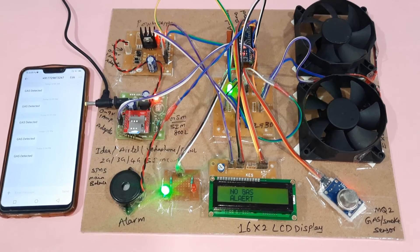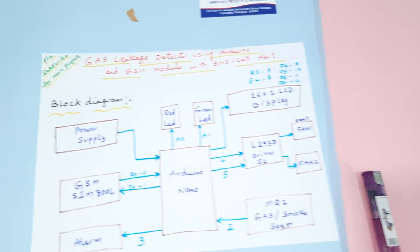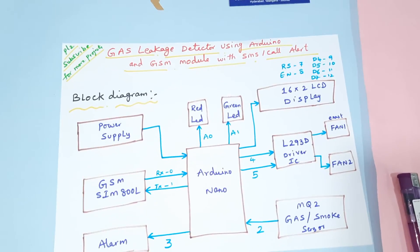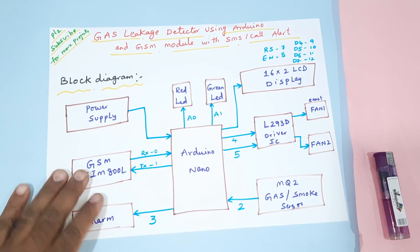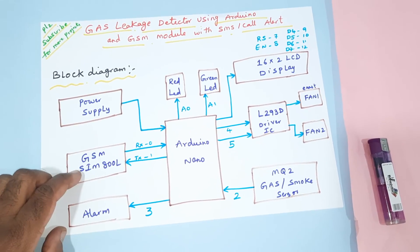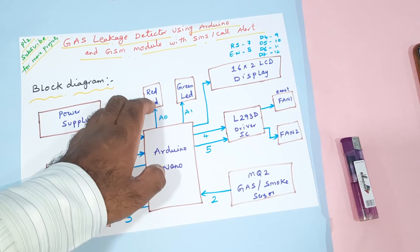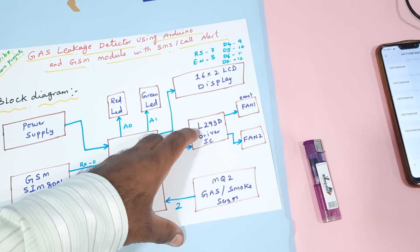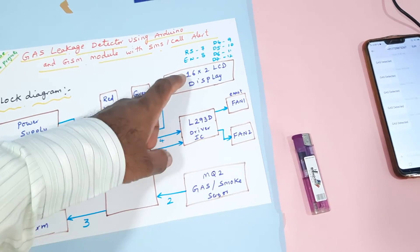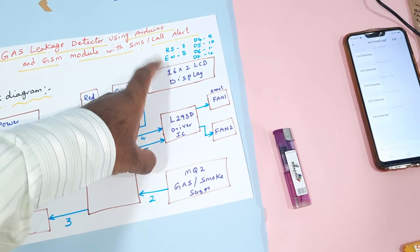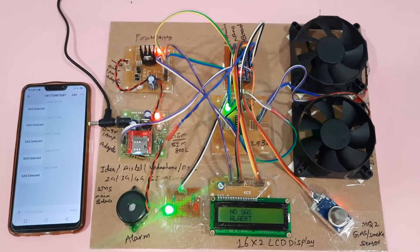Thank you. If there is any doubt, please let us know at SVS Embedded. This is our block diagram: power supply module, SIM800L, alarm, Arduino Nano board, red LED, green LED, L293D, fan 1, fan 2, smoke sensor, and 16x2 LCD display.